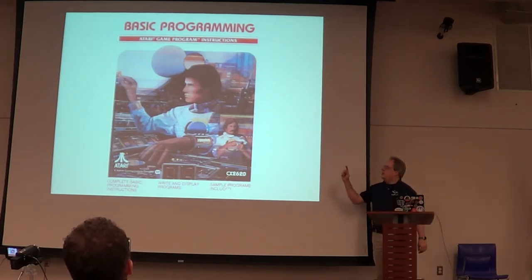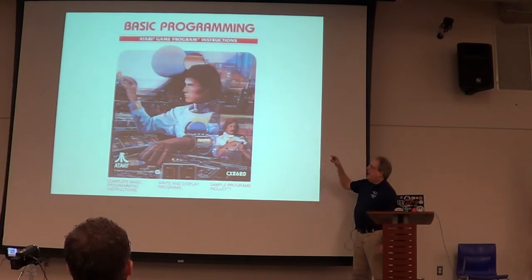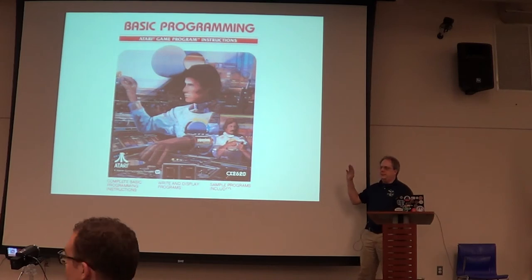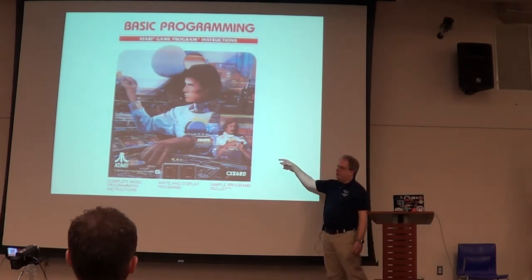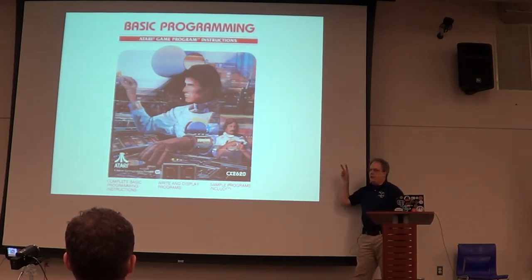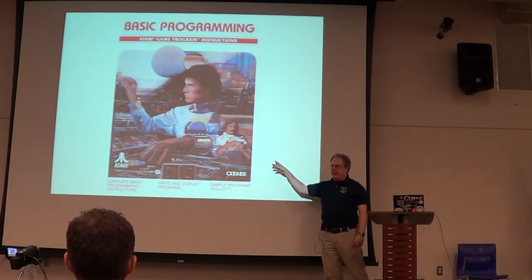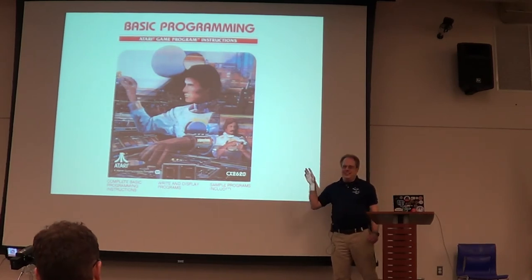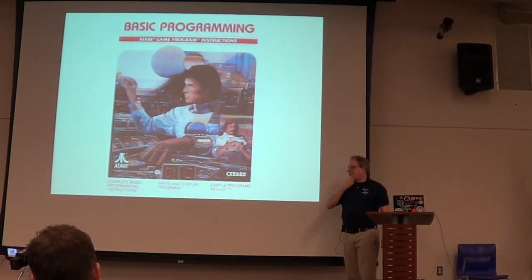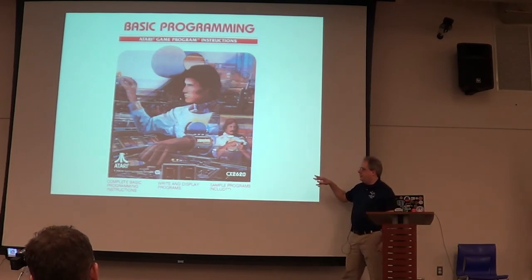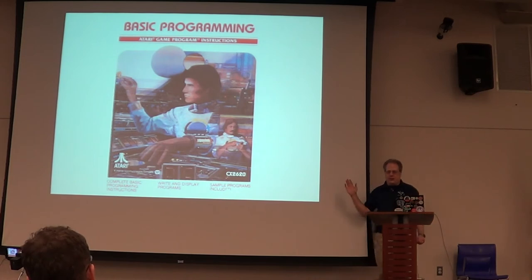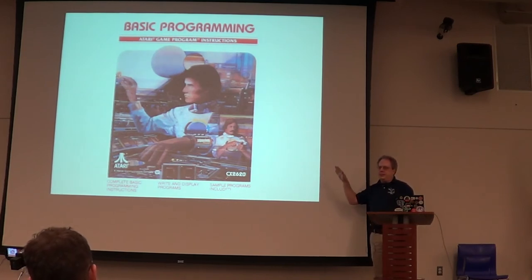But there are three things wrong with this picture. Number one, this is for the Atari 2600 — this is the cartridge for the 2600. Number two, I don't think anyone in this room has ever actually programmed quite like that — looking like you're some futuristic Buck Rogers person. And number three, programming the 2600 never looked like that, ever. This was definitely part of Atari's brilliance in marketing — being able to come up with covers that made you think that was what was going to be inside, but really didn't match reality.